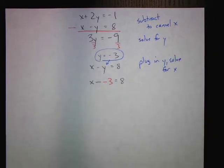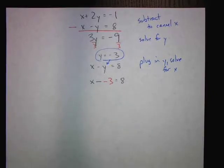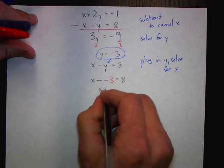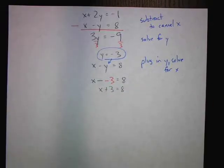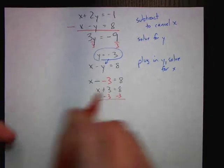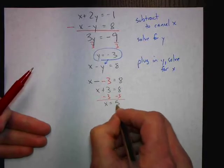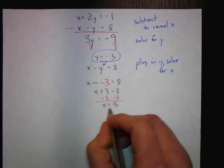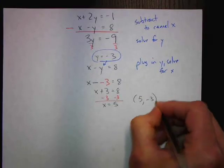Some of you may be gut-instincting that we should add 3 to both sides — but if you do that you'll make a mistake because we have a minus negative. Minus and negative is plus. Clean up your equation before solving — you're going to make life a whole lot easier. So we subtract 3 on both sides and find x equals 5. We now have our ordered pair: x equals 5, y equals negative 3.